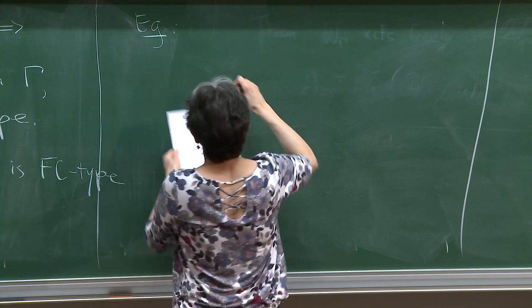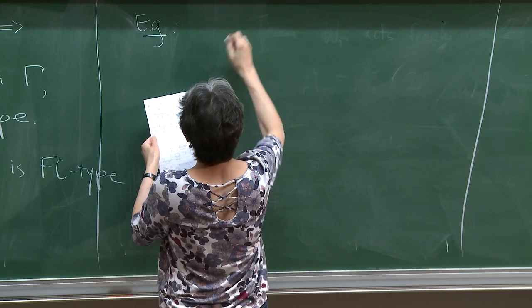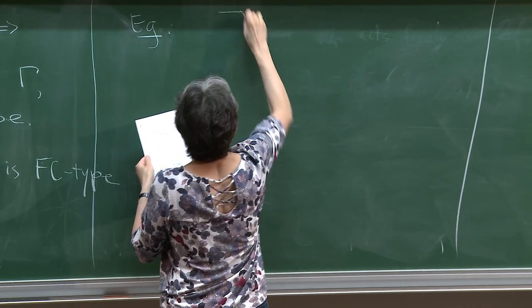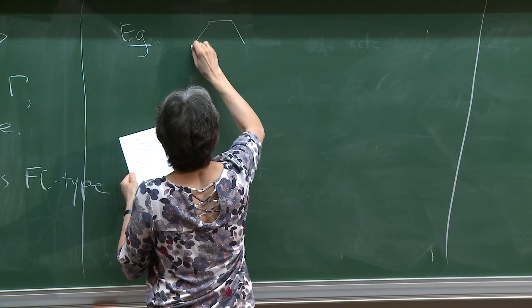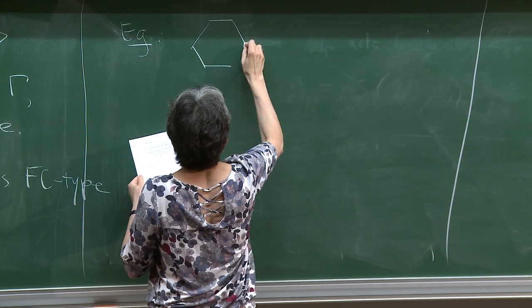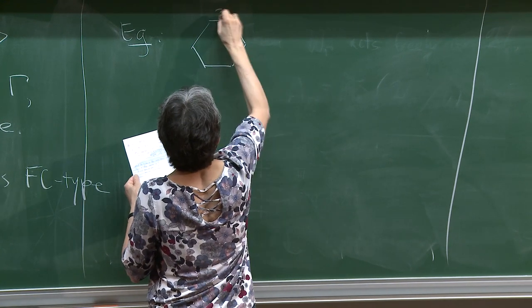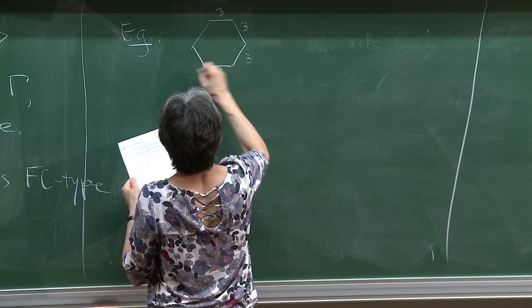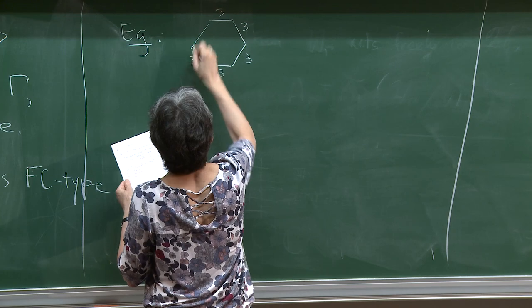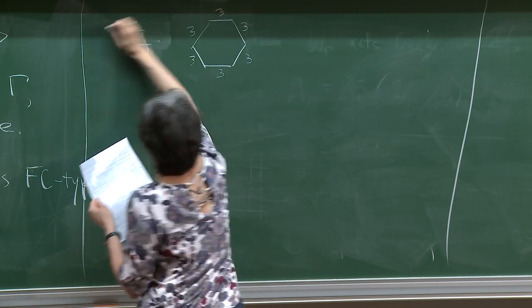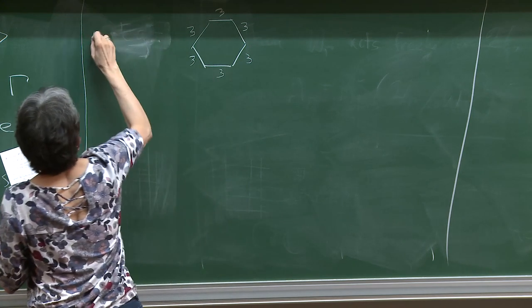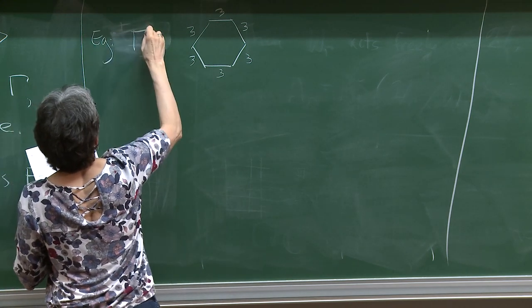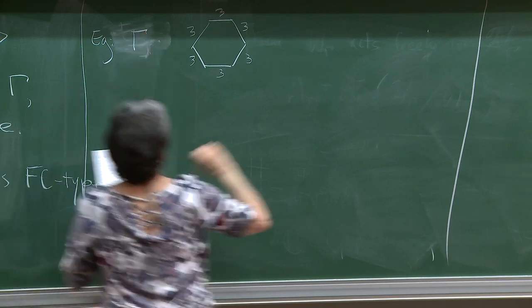Let me do some examples so everyone understands what FC type is. Here are three graphs — this is γ I'm drawing — and the question is: are they FC type or not?